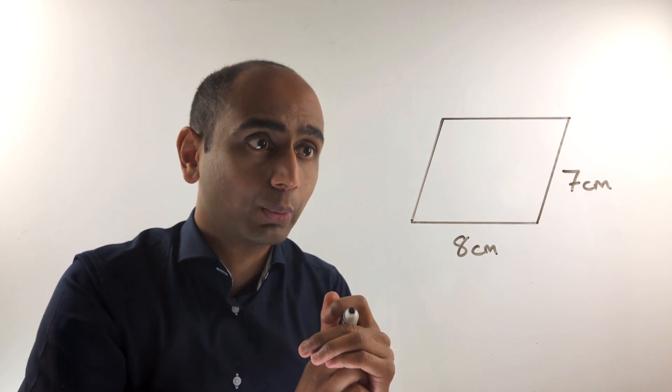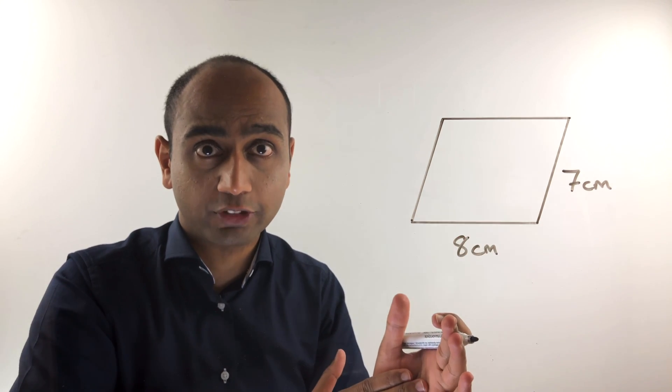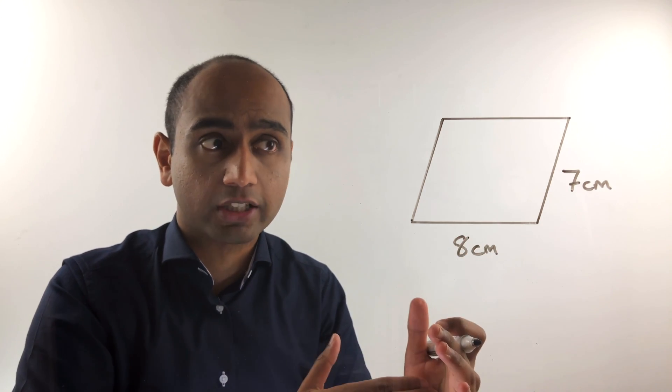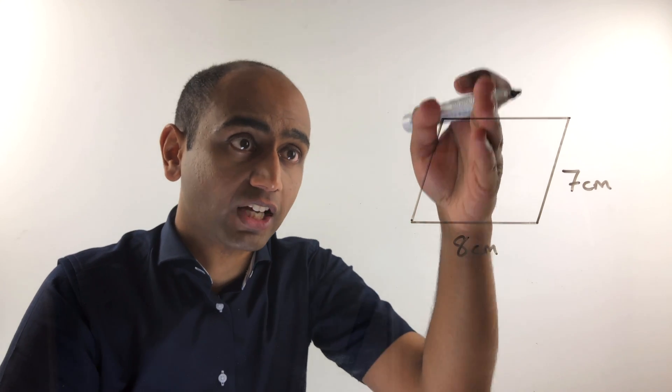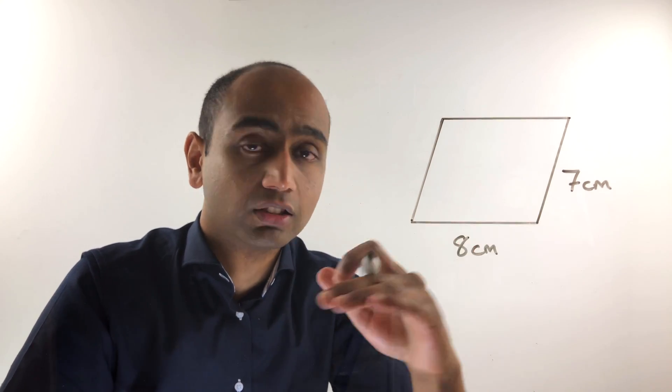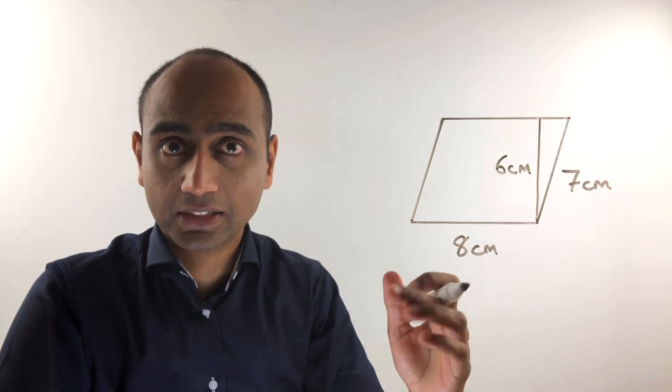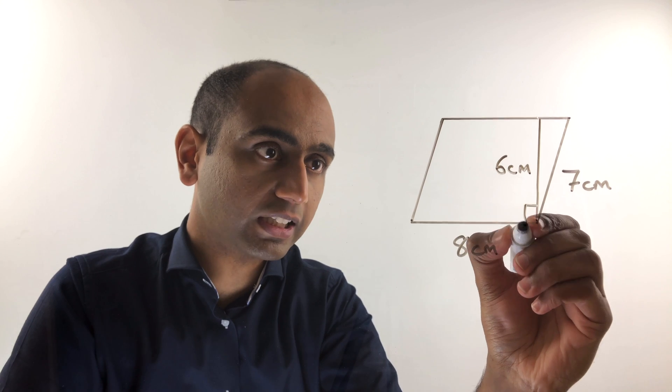But let's think about how we can do this. Actually as it stands we don't have enough information to work out the area. What we need is the height of this parallelogram, and the height needs to be perpendicular to the base. Now we're told the height is 6 centimetres and the height is perpendicular to the base.